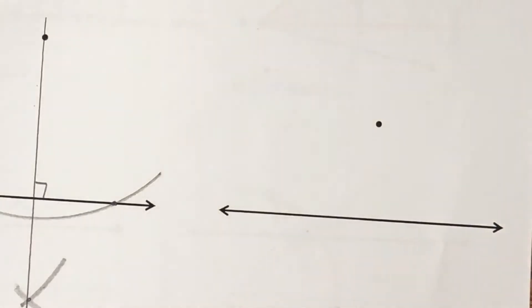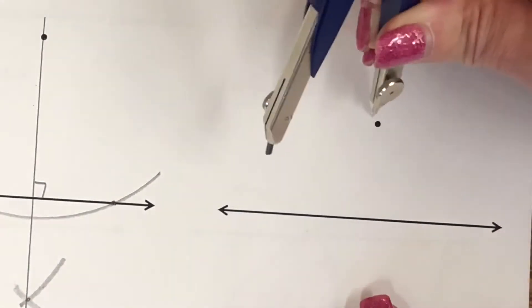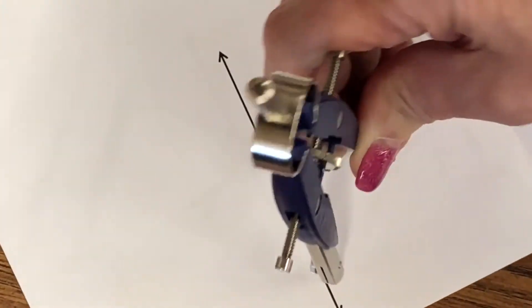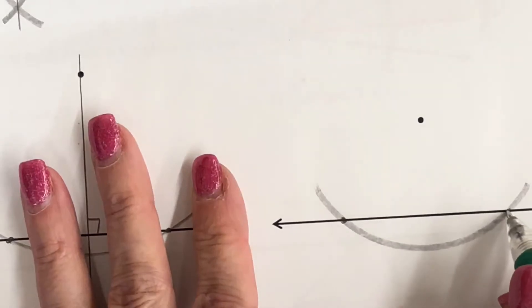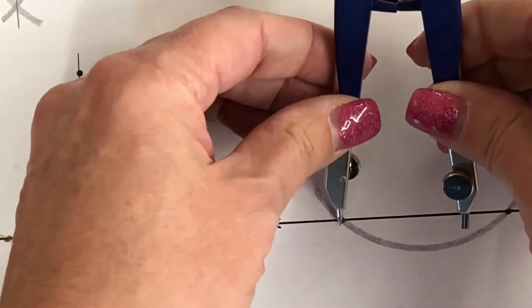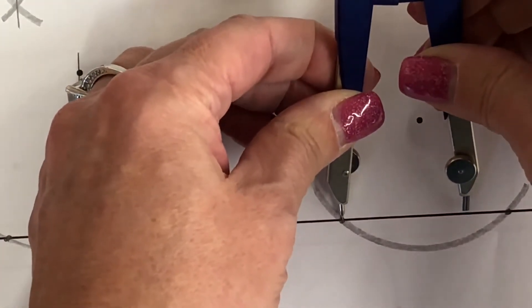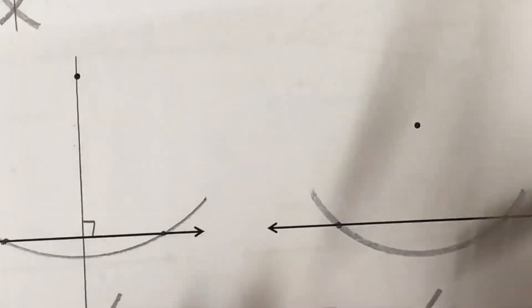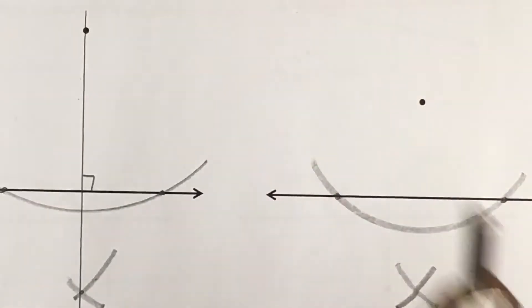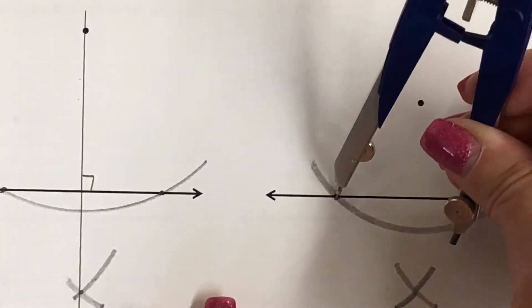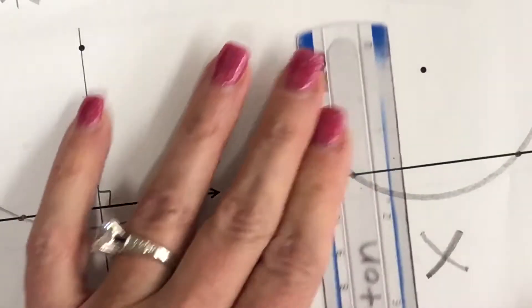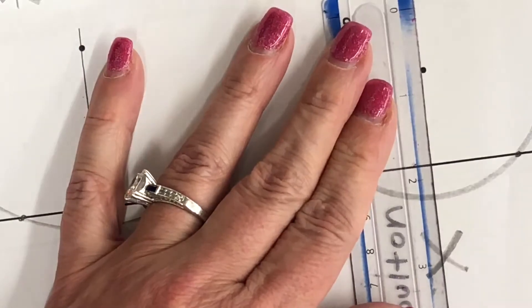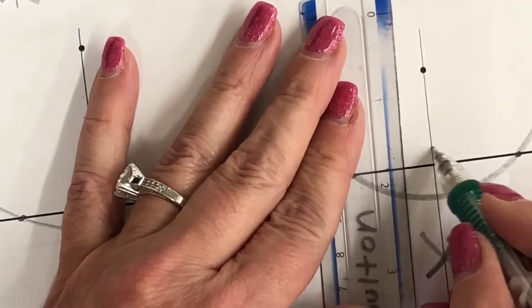Number eight, our last perpendicular through a point not on the line. More than half — that got a little wobbly so I'm going to do it again. Connect the points and put your symbol to show that it's 90 degrees.